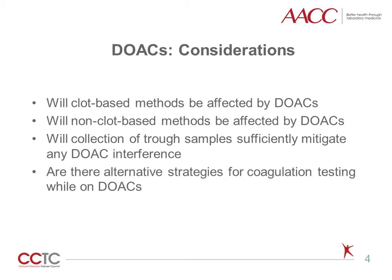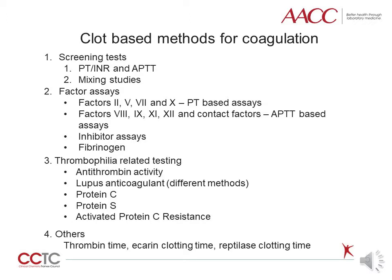Will DOACs also affect non-clot-based assays, such as immunoassays? As trough levels represent the lowest DOAC concentration in the patient, will trough collections mitigate any DOAC interference? And lastly, are there any alternative strategies for testing in the presence of DOACs? This slide represents a review of clot-based coagulation testing, including the screening test PT-INR and APTT, factor assays, thrombophilia testing, and other routine or esoteric assays. In prior pearls, we have extensively described the DOAC effect on screening tests such as the PT and APTT. As DOACs are inhibitors of activated coagulation factors, PT and/or APTT mixing studies may mimic an inhibitor pattern. In this session, we will describe a general overview of the effect of DOACs on more esoteric coagulation assays.